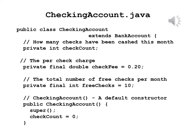And now the derived class CheckingAccount. We start with its header: public class CheckingAccount extends BankAccount. Next, we will have private int checkCount — we will count the number of checks because after 10, we will pay 20 cents per check cashed. The per-check charge: private final double checkFee = 0.20. Private final int freeChecks = 10, because it will remain a constant 10 free checks. The default constructor: public CheckingAccount, super — calling the constructor for the base class — checkCount equals 0.